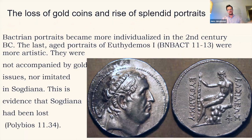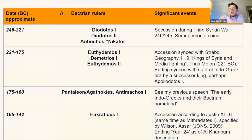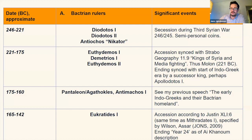Why do I start the Euthydemid dynasty at 221 BC? That's because I cling to a straw — the only straw there is — which is Strabo, Geography 11.9. It says that the kings of Syria and Media were fighting with each other when Euthydemus became king in Bactria. The only king in Media in the third century was Molon, and he rebelled in 221. This idea was given to me by Jeffrey D. Lerner, who wrote about it in the 90s — it's not certain, but it's the best we have.